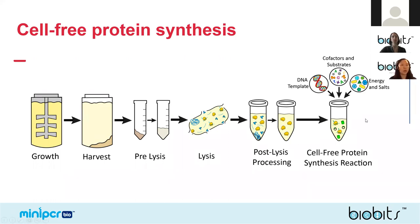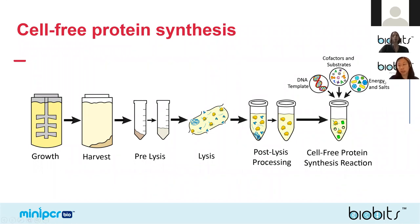Once you have the cell extract, you need to add other things back in: nucleotides to build RNA after transcription, amino acids to build proteins, and an energy source like ATP to power transcription and translation. After all of that, all you need to do is add DNA — whatever DNA you add will undergo transcription and translation, going from DNA to RNA to protein, and you'll get the protein that your DNA encoded for.